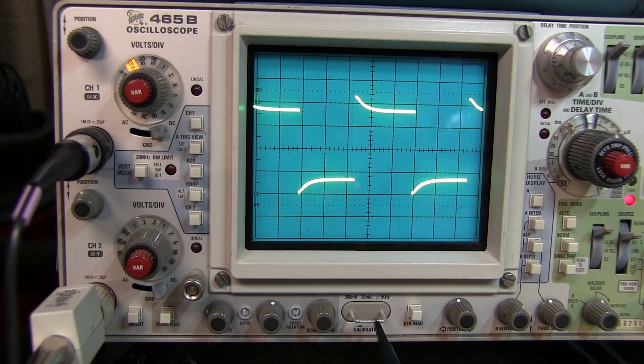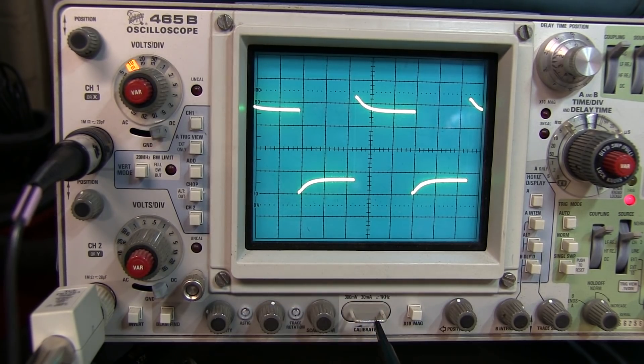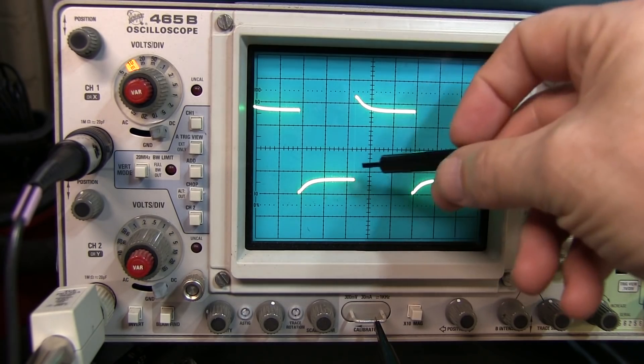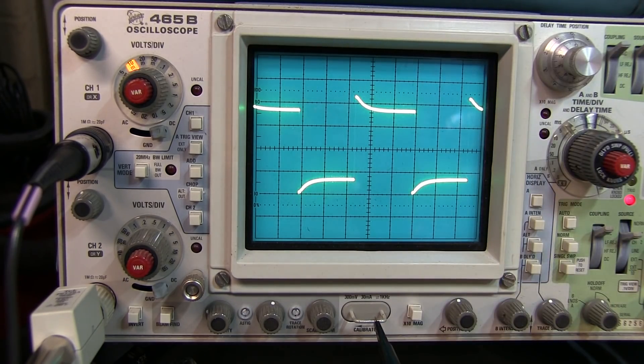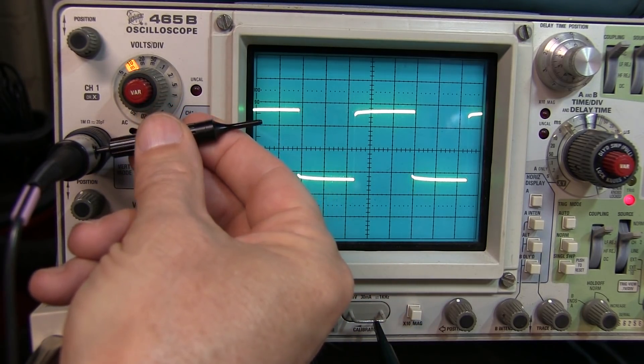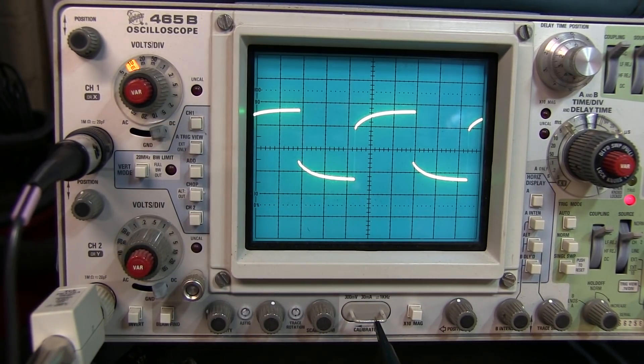Now I've connected the 10x probe from channel 1 to the probe compensation signal. And from this improper compensation, I can see that the higher frequency components are going to be abnormally high. They're not going to read properly. So if we adjust the compensation adjustment here, and if we were improperly adjusted this way, then the higher frequency components will be lower in amplitude than they should be.